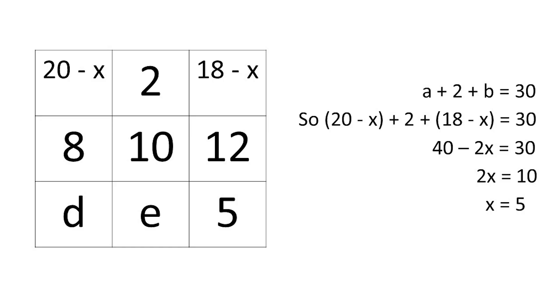If we think about how we approach this problem, the middle row is very straightforward — we have two of the three values already given, so we can find the middle number immediately.